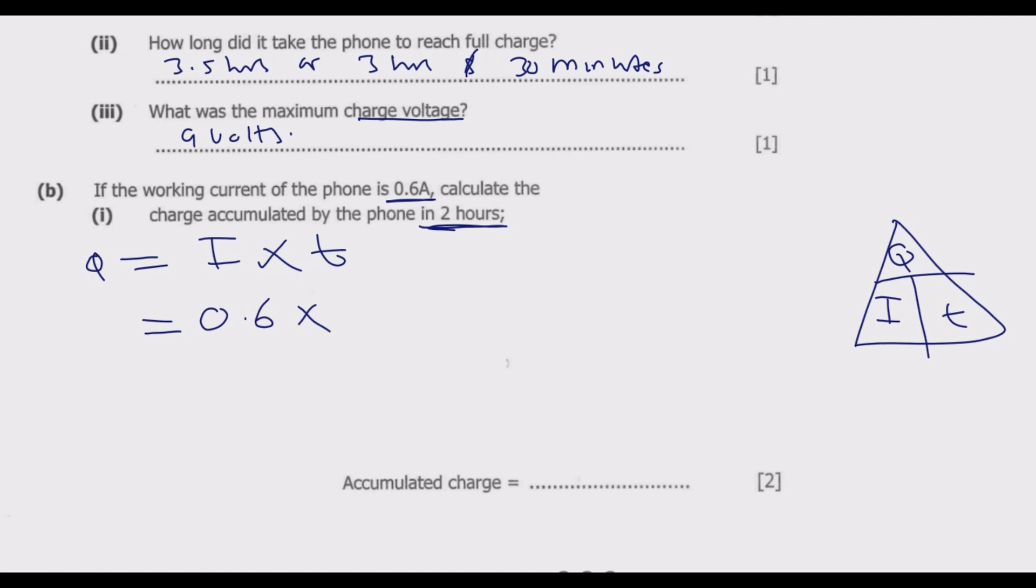How many minutes are in an hour? 60 minutes. How many seconds are in one minute? 60. So it's 0.6 multiplied by 2 times 60 times 60, we're going to get 7200. Then you multiply, and at this point you're going to end up with 4320 coulombs as the accumulated charge.